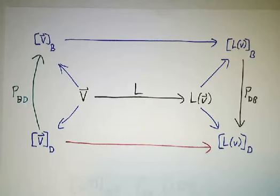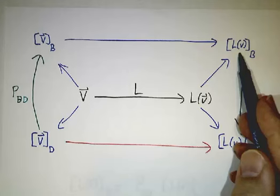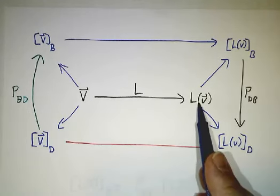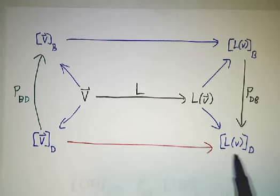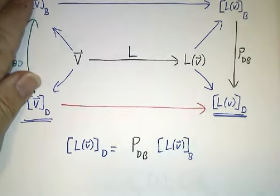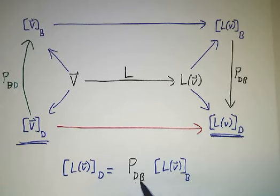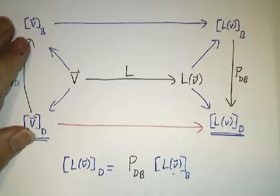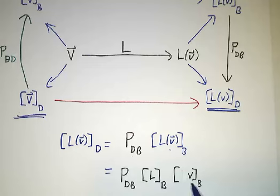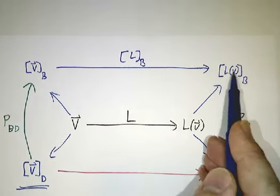You can do the same diagram looking at individual vectors. You've got some vector v sitting in this abstract vector space. You can look at its coordinates in the b basis, the coordinates of the output Lv in the b basis, the coordinates of the output in the d basis, and the coordinates of the input in the d basis. We want to see how the coordinates of the output in the d basis are related to the coordinates of the input in the d basis. The output in the d basis is the output in the b basis times the change of basis matrix — that's what the change of basis matrix does.